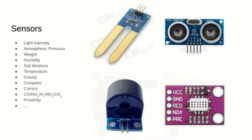Sensors are some of the most interesting components to read, and most of them require a single analog pin. There are sensors for almost anything: light intensity, atmospheric pressure, weight, humidity, soil moisture, temperature, gravity, compass, current, air pollution chemicals, proximity, and more.